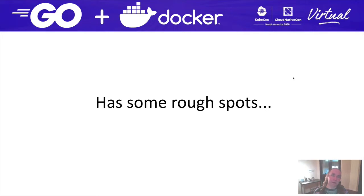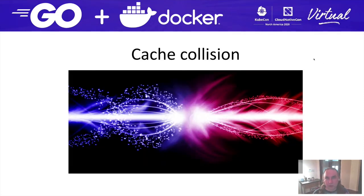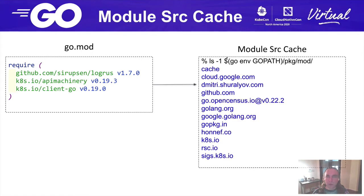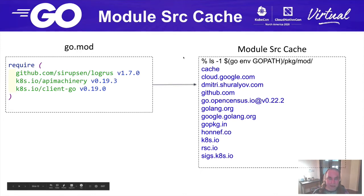As you bring Go and Docker together, there are some rough spots. The first is what I refer to as cache collision. In Go, you have a couple of caching mechanisms that make builds fast. If you have a go.mod file listing the modules you depend on, when you do a build, Go will download the source code for all those modules and put them in its module source cache at GOPATH/pkg/mod. This source cache means it doesn't have to re-download modules every time you rebuild — only when you change versions.